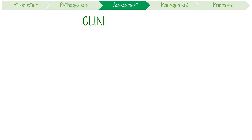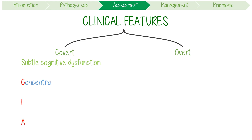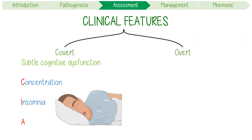In terms of its clinical features, hepatic encephalopathy should always be classified as covert or overt. Covert HE describes a state of low-level, often subtle cognitive dysfunction — think of the CIA: impaired concentration, sleep disturbance like insomnia, and slight personality or affect changes.